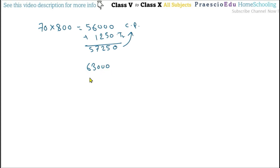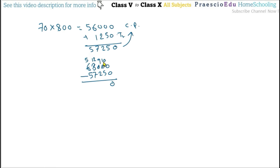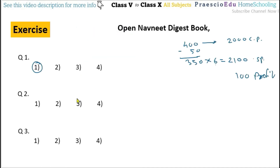She sold the cookers for 63,000. So profit equals 63,000 minus 57,250. That gives us 5750. This is her profit, and this is given in option number 3.